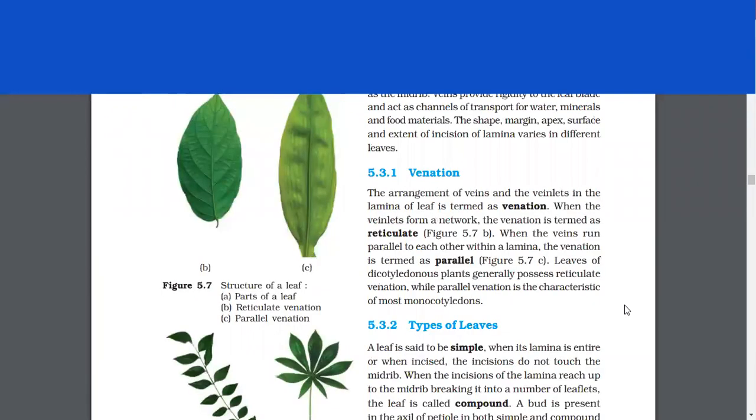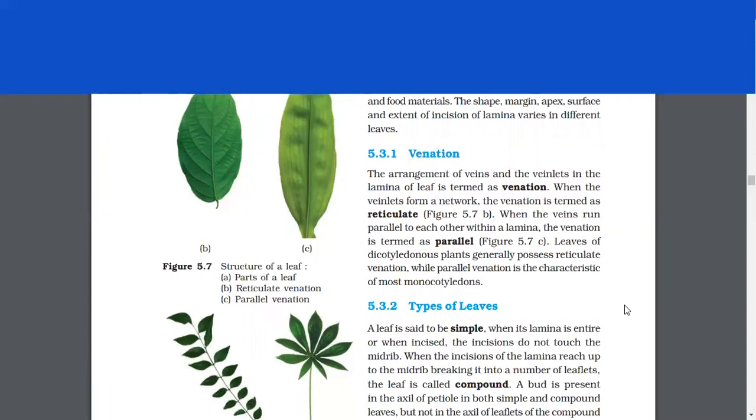Venation. The arrangement of veins and the veinlets in the lamina of leaf is termed as venation. When the veinlets form a network, the venation is termed as reticulate. When the veins run parallel to each other within a lamina, the venation is termed as parallel. Leaves of dicotyledonous plants generally possess reticulate venation, while parallel venation is the characteristic of most monocotyledons.